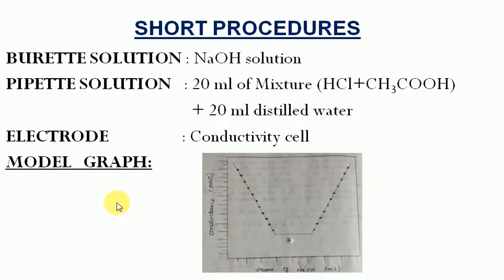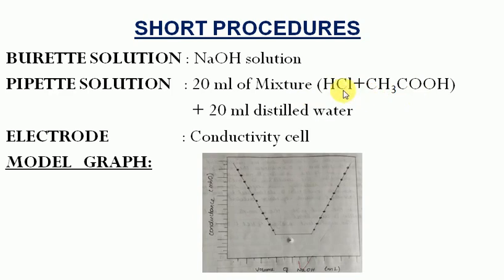In Conductometric Titration of a mixture of acids, we will take a burette solution with sodium hydroxide. We will take a beaker solution with 20 ml of acid — that is HCl plus acetic acid: HCl 10 ml plus acetic acid 10 ml. We will add distilled water.